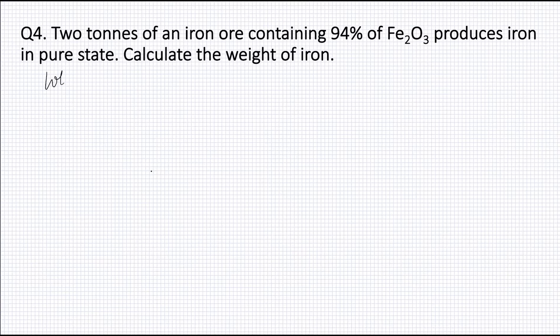The weight of Fe2O3 in iron ore is given as 94% of 2 tons, that is 94% of 2000 kg, which is equal to 1880 kg.